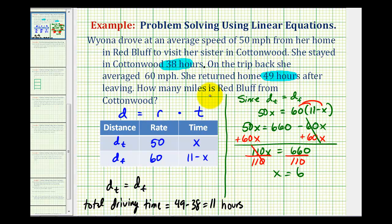But the question asks us, how many miles is it from Red Bluff to Cottonwood? Since these two distances are equal to each other, it doesn't really matter which equation we use. Let's just use the first one, where d sub t does actually represent the distance from Red Bluff to Cottonwood.